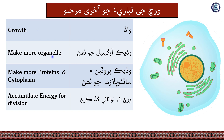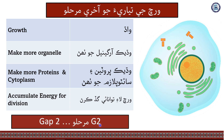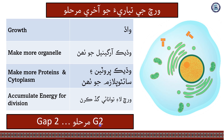During this stage, growth continues — more organelles and more proteins are made in the cytoplasm, and energy is accumulated for division. These four functions exist in the last gap phase, G2, or Gap 2.